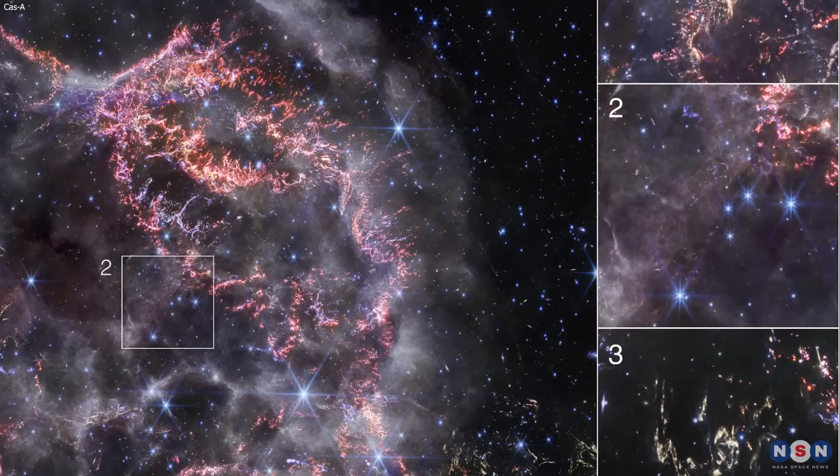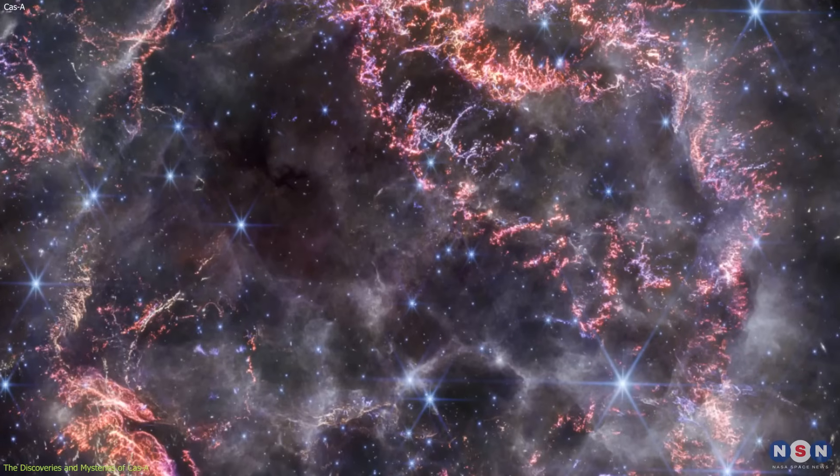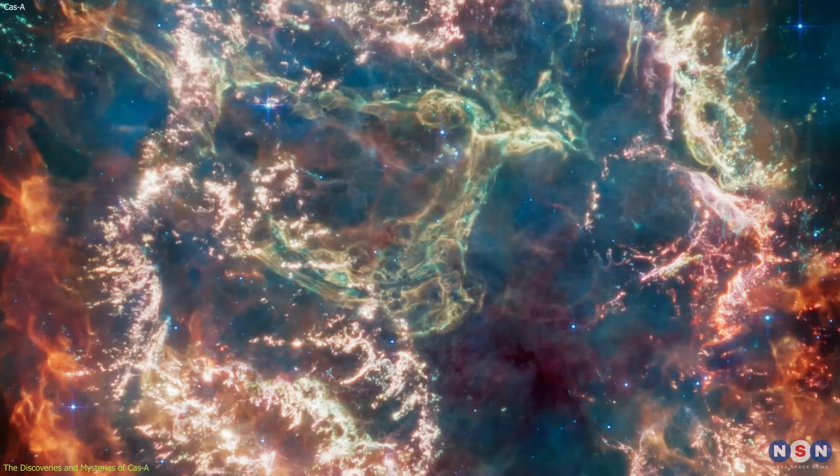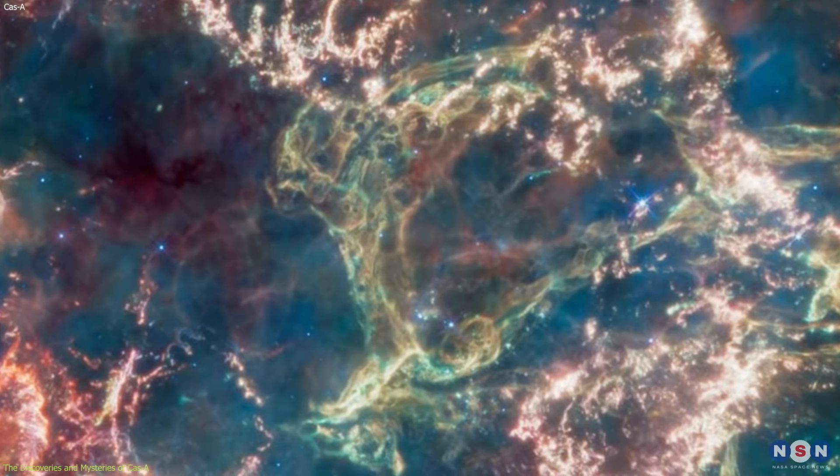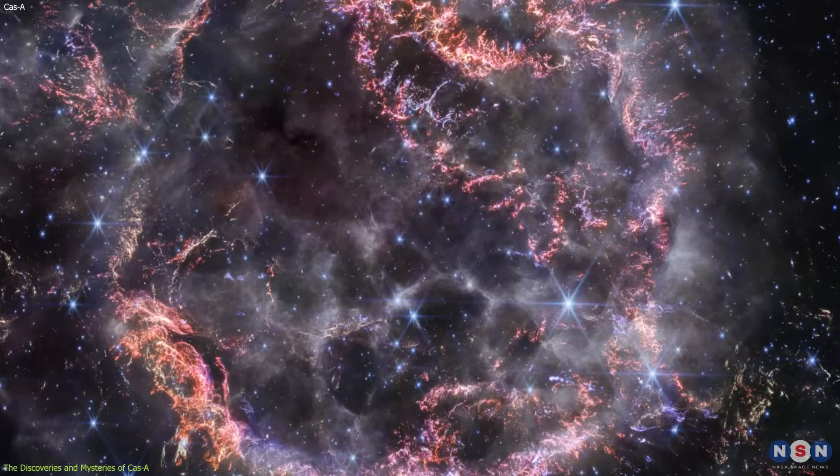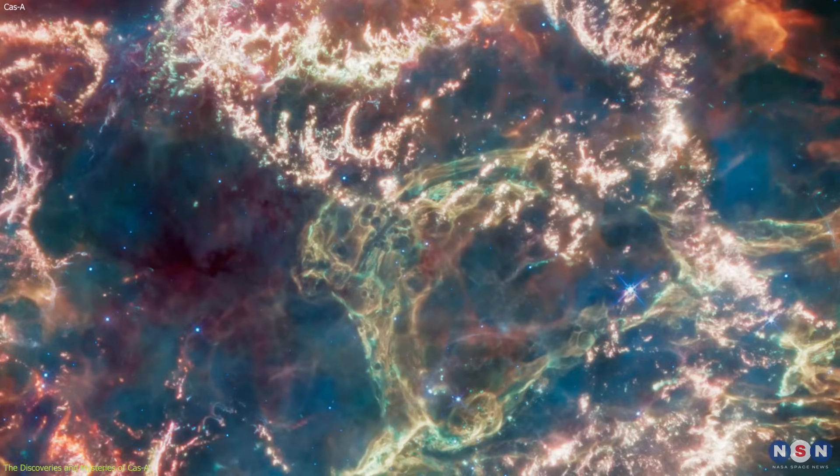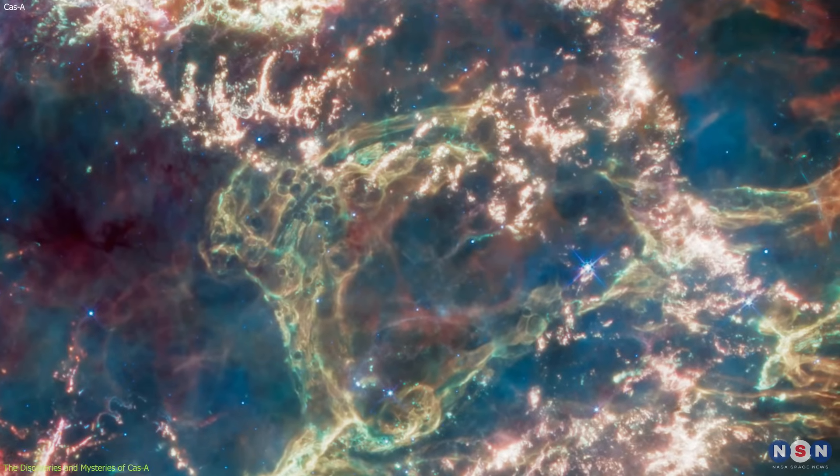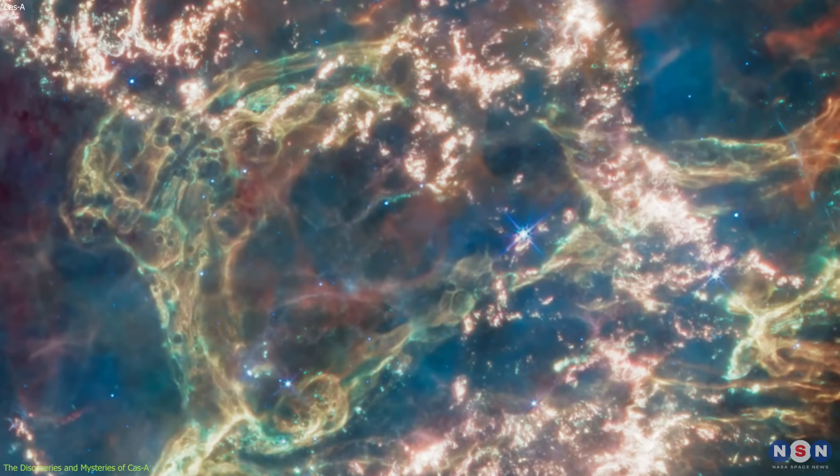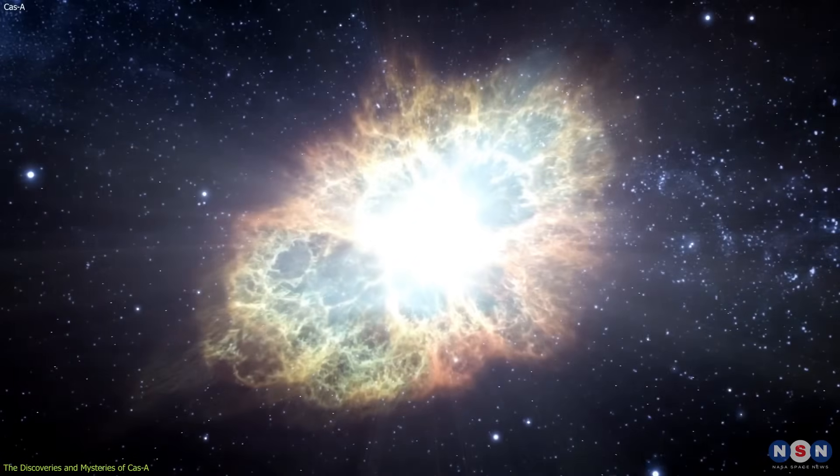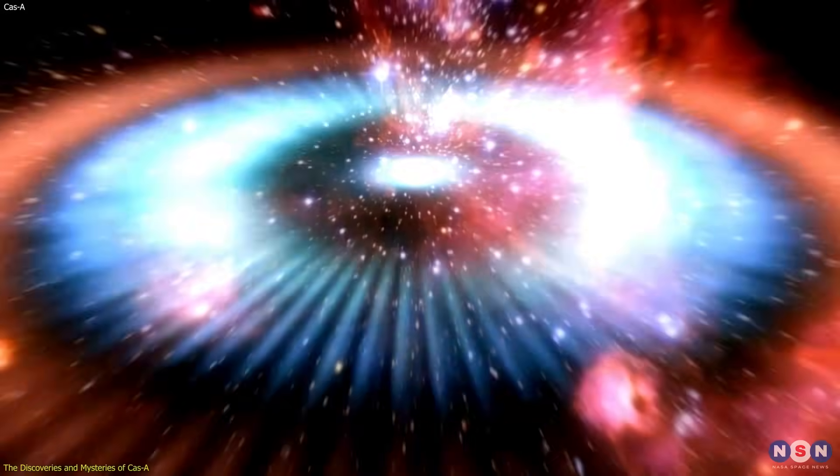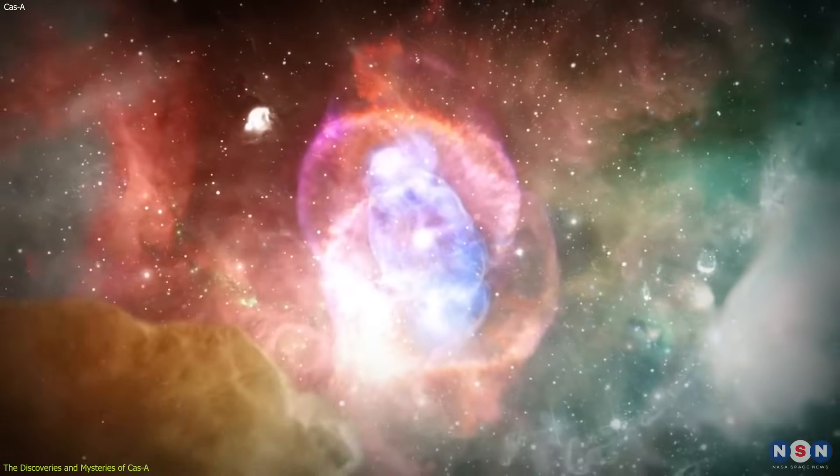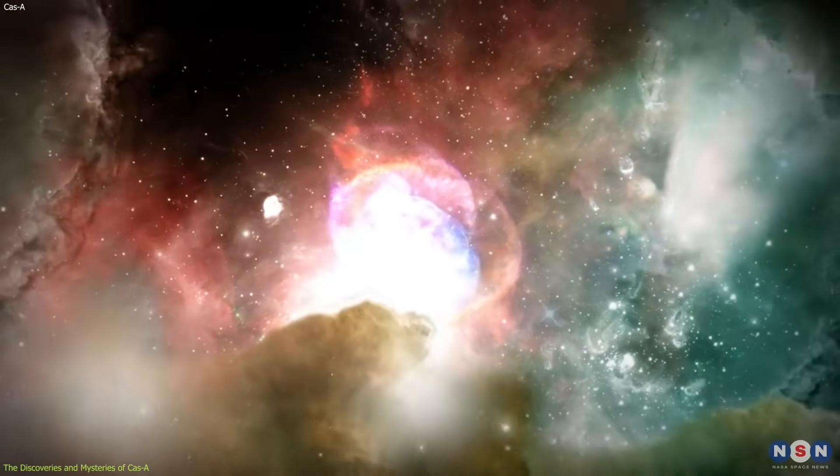The Cass A also reveals some new discoveries and mysteries that the NIRCam can detect, but the MIRI can't. One of them is the Green Monster, a loop of green light that was seen by the MIRI in April, but is not visible in the NIRCam image. The Green Monster is challenging to explain because it doesn't match any of the known physical processes or phenomena in the supernova remnant. Some scientists think that it could be a reflection of the light from the supernova explosion, or a shockwave that is heating up the gas and dust, or a magnetic field that is twisting the gas and dust.